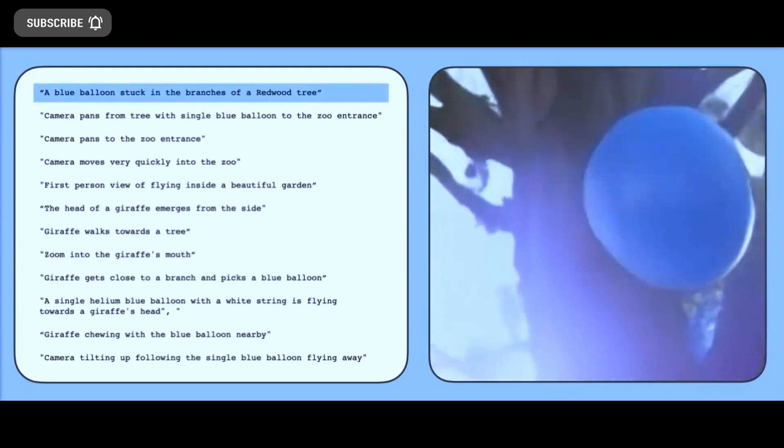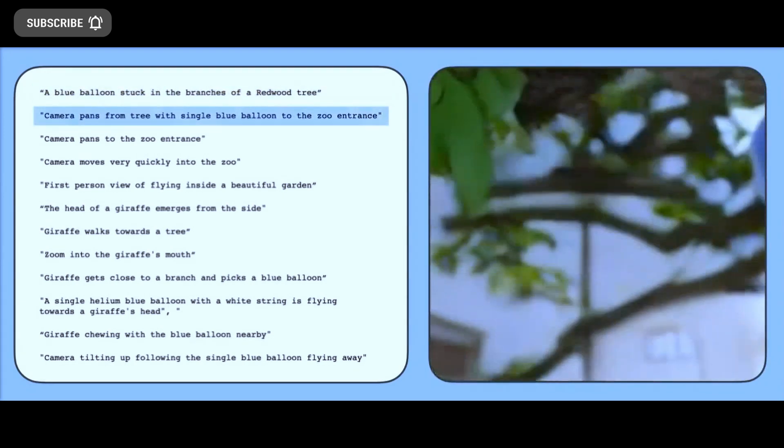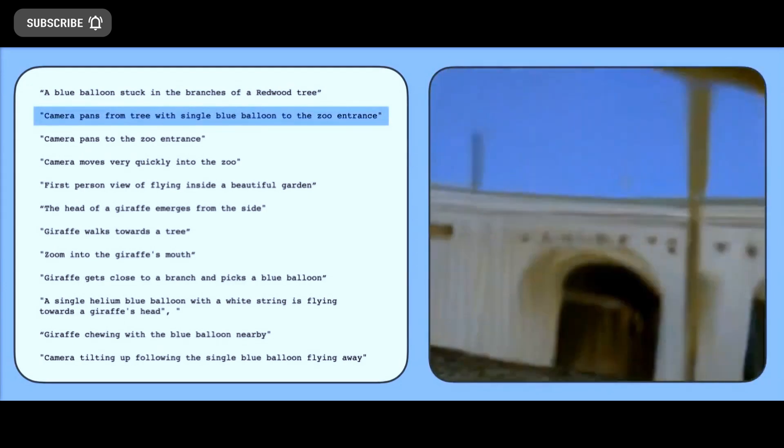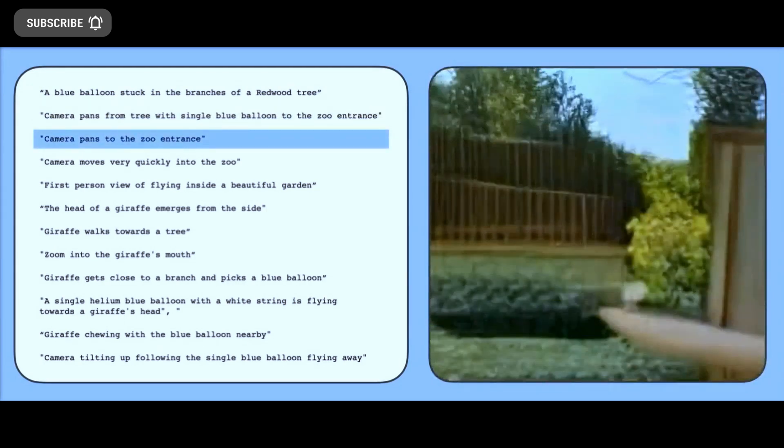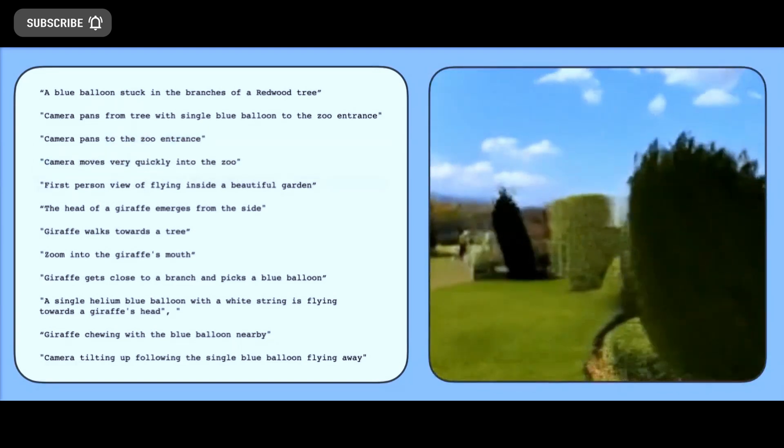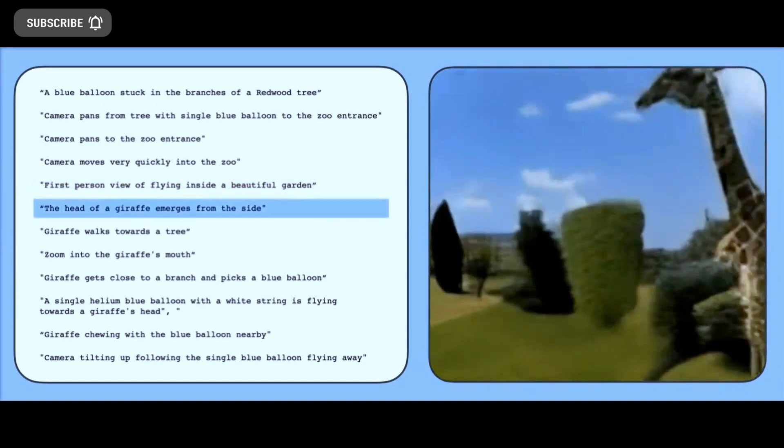Since the data used to train Imogen Video may contain some inappropriate content, Google does not intend to release or open source the AI model at this time. Imogen Video is based on Google's Imogen text-to-image artificial intelligence model and uses cascaded diffusion models to generate high-resolution videos.